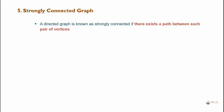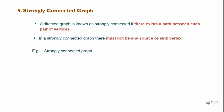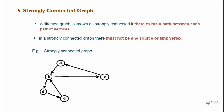A directed graph is known as strongly connected if there exists a path between each pair of vertices. In a strongly connected graph there must not be any source or sink vertex. The example shown is strongly connected as there is no source or sink vertex.